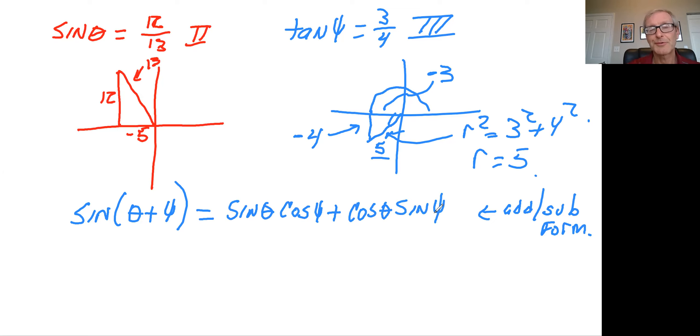So with these triangles we have all these numbers. So theta is the red triangle. Sine of theta we're given already was 12 over 13. So what's cosine of theta? Let's do thetas first. So that would be this one here. So cosine would be minus 5 over 13. So that's adjacent over hypotenuse.